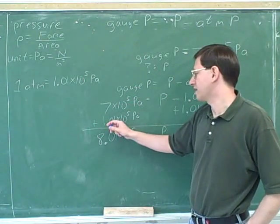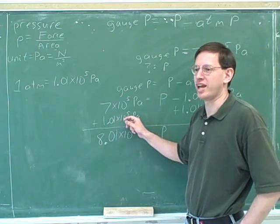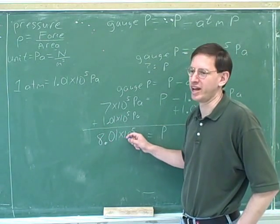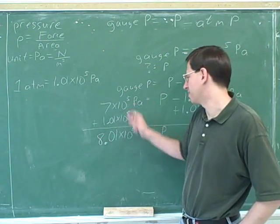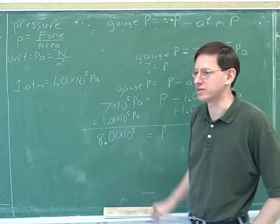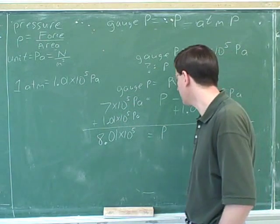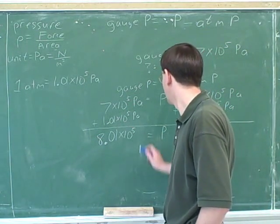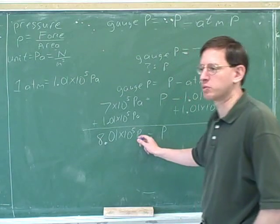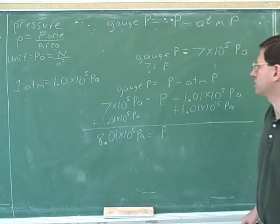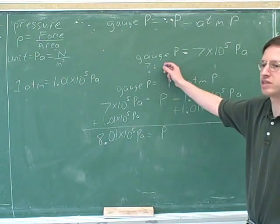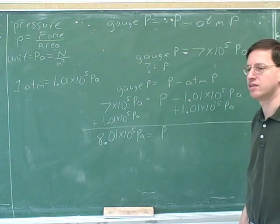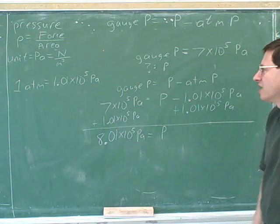This is like 7x plus 1.01x, which gives 8.01x — where x is 10 to the 5th. We don't add the exponents here. So the actual absolute pressure P is 8.01 times 10 to the 5th Pascals.